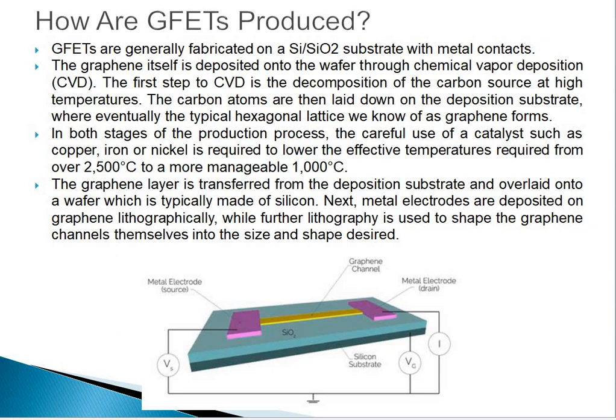Now the most important part: how are graphene field effect transistors produced? Graphene FETs are generally fabricated on a Si/SiO₂ substrate with metal contacts. The graphene itself is deposited on the wafer through chemical vapor deposition (CVD). The first step is the decomposition of the carbon source at high temperature. The carbon atoms are then laid down on the deposition substrate, where eventually the typical hexagonal lattice we know as graphene forms. In both stages of the production process, the careful use of a catalyst such as copper, iron, or nickel is required to lower the effective temperature required from over 2500°C to a more manageable approximately 1000°C.